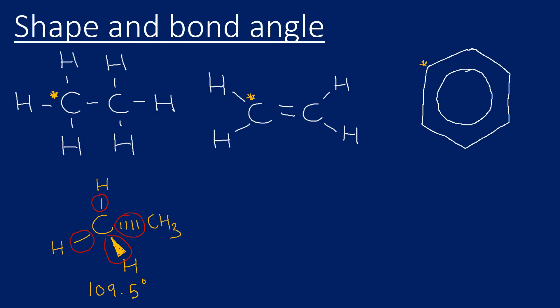In an alkene, there's no need for wedge-dash notation around the double bond carbon because it is said to be planar. This carbon has a double bond, a single bond, and another single bond — it's flat. The bond angle is 120 degrees, and the shape is described as trigonal planar.